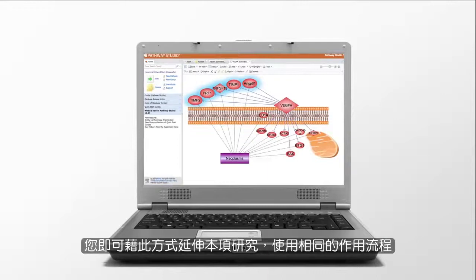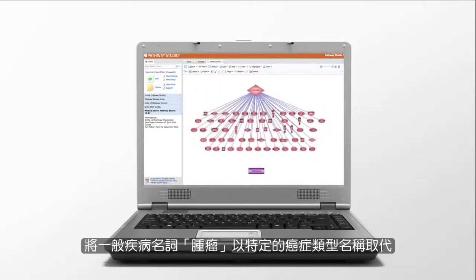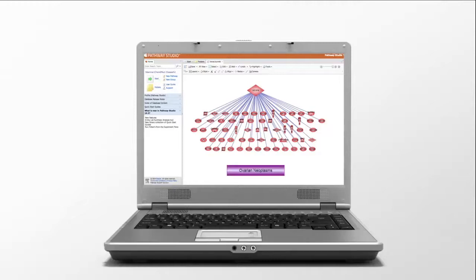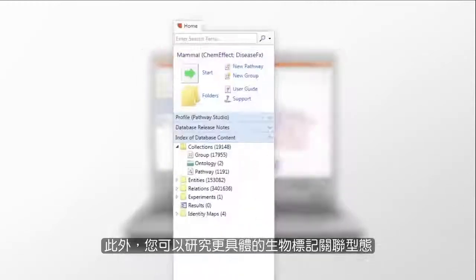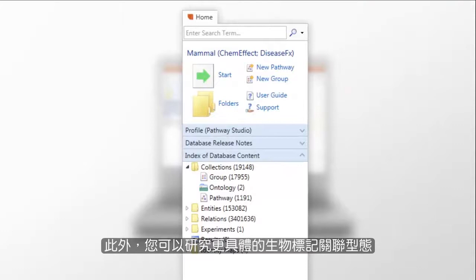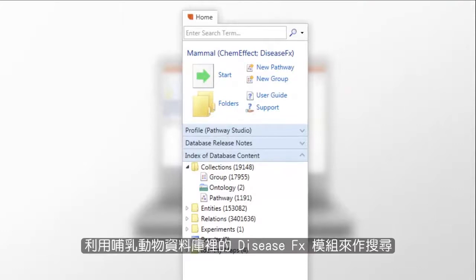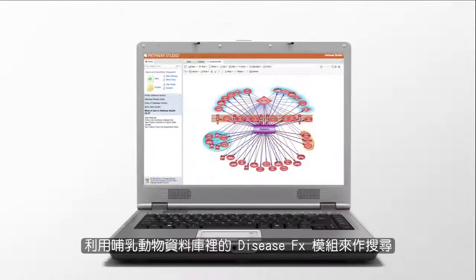You can expand this search using the same workflow and replace the general disease term of neoplasm with specific tumor types. Additionally, you can investigate more specific biomarker type of relations when utilizing the DiseaseFX database in addition to the Mammal database.